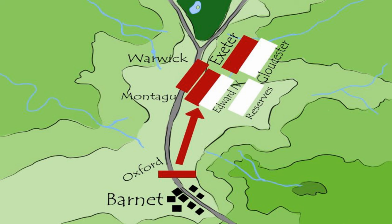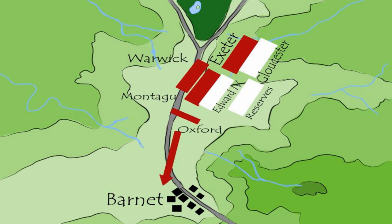Oxford was able to retrace his steps through the fog back to the fight. His battle arrived unexpectedly at Montague's rear. Obscured by the fog, Oxford's star with rays badge was mistaken by Montague's men for Edward's sun in splendour. They assumed their allies were Edward's reserves and unleashed a volley of arrows. Oxford and his men immediately cried treachery. As staunch Lancastrians, they were wary of Montague's recent defection. They struck back and began withdrawing from the battle. Their shouts of treason spread quickly throughout the Lancastrian line, breaking it apart as men fled in anger, panic and confusion.